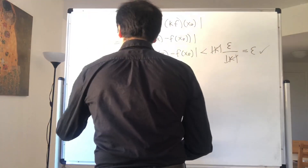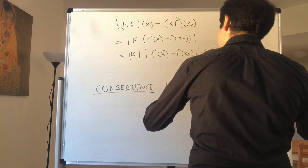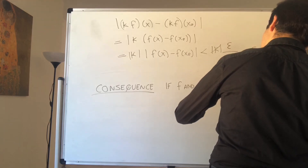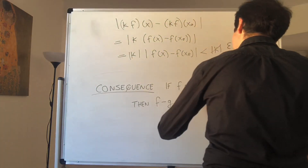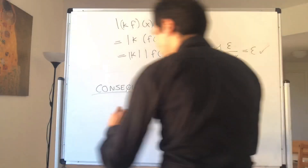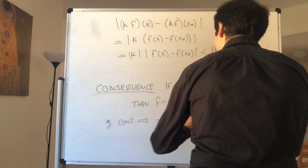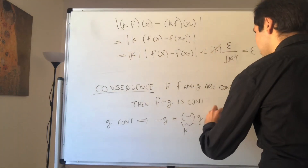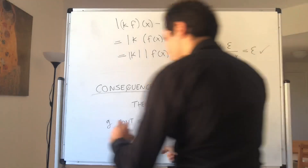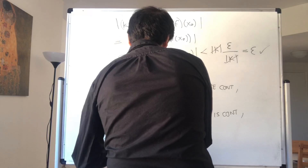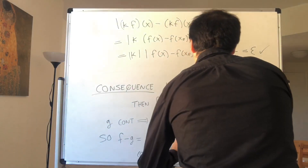As a consequence, if f and g are continuous, then f minus g is continuous. We know g is continuous, therefore minus g — which is just minus 1 times g, so k equals minus 1 — is continuous. And since f is continuous, f minus g equals f plus (minus g), which is the sum of two continuous functions, so the whole thing is continuous.